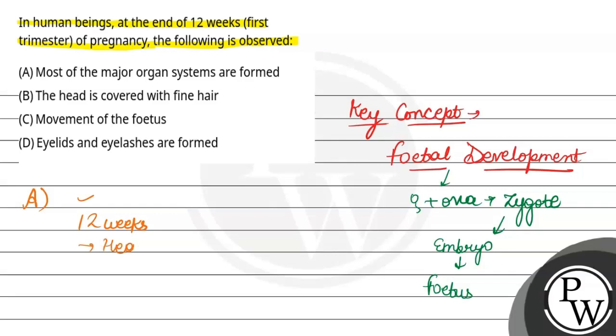Like heart form, brain form, lungs, digestive system, all are formed in fetus around 12 weeks. So first option is correct.